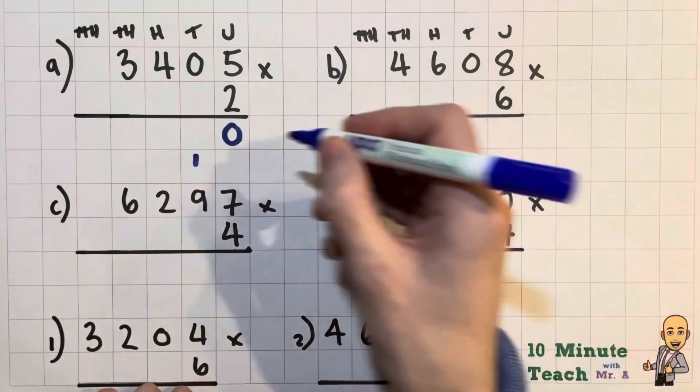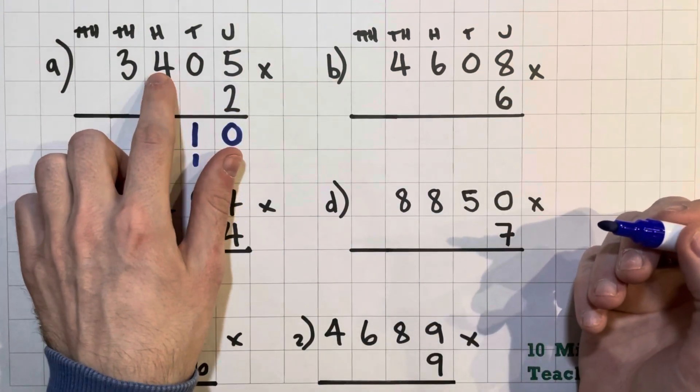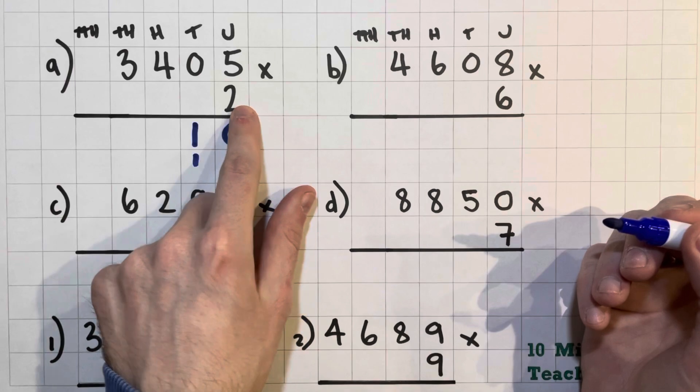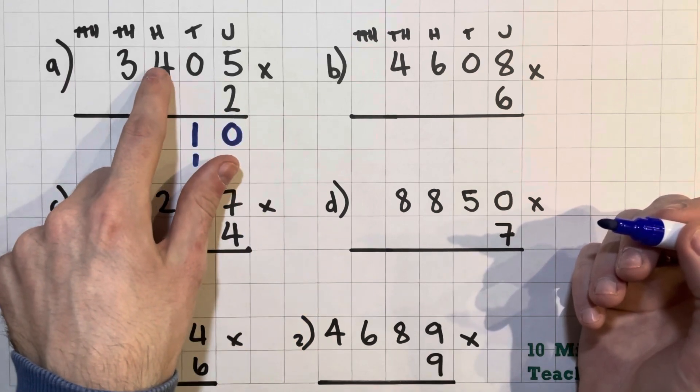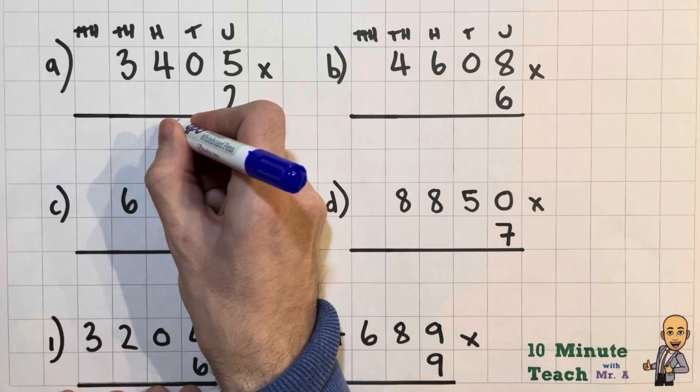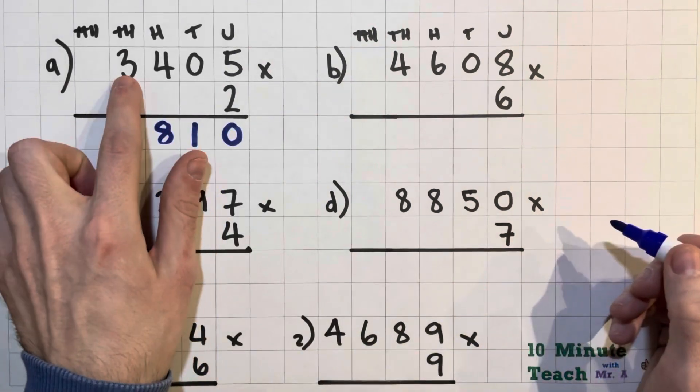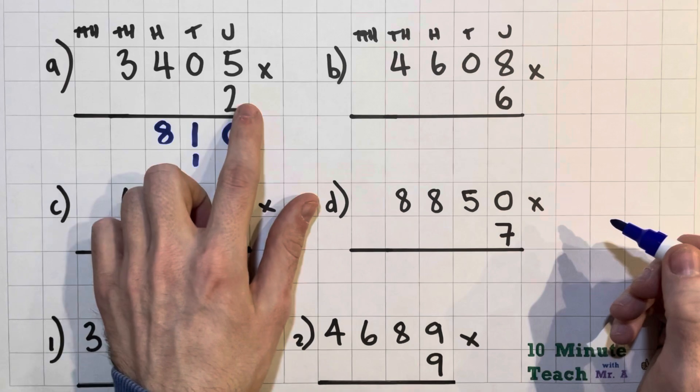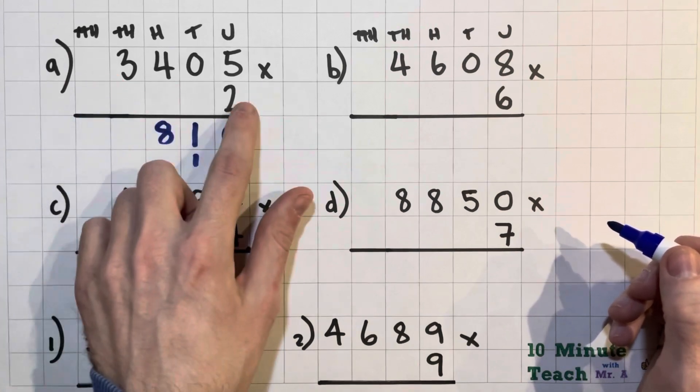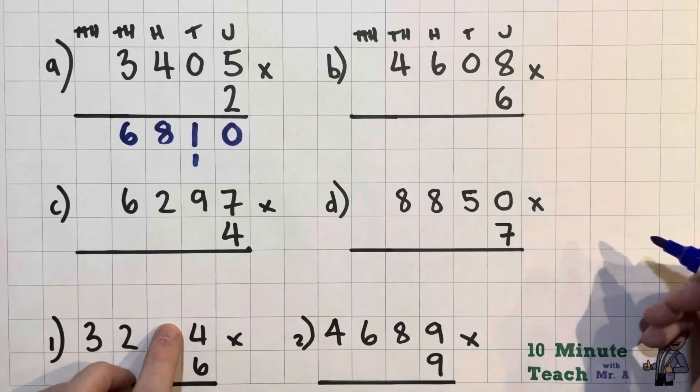So we can't forget that 1. And I've got 400, or 4 times 2, because it's in the hundreds column. So I have 400, two lots of 400s are 800. And I have 3000 multiplied by 2 as well, which makes 6000. There we go.